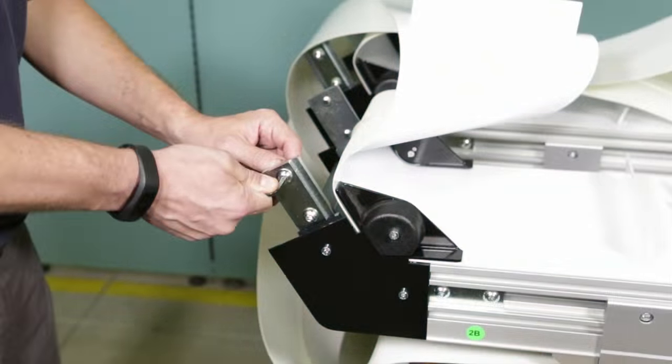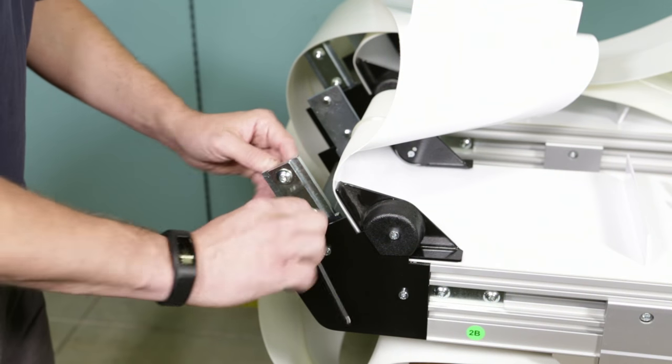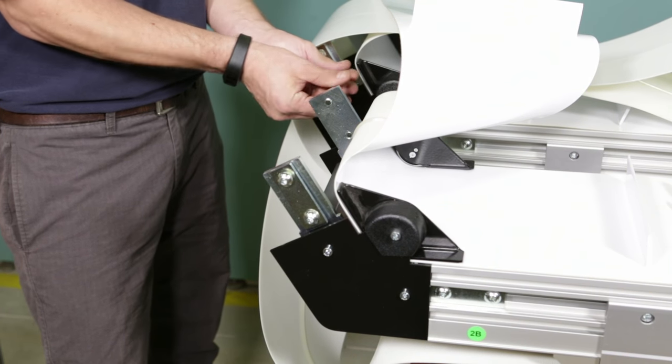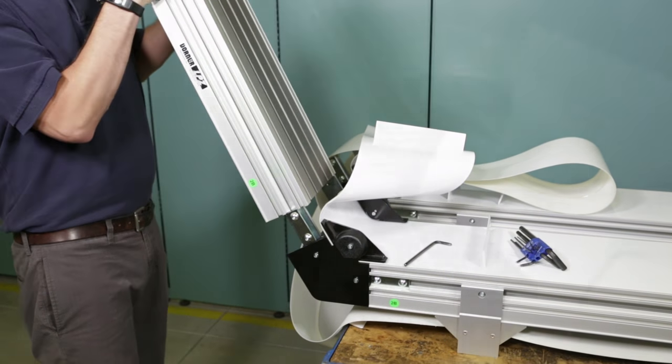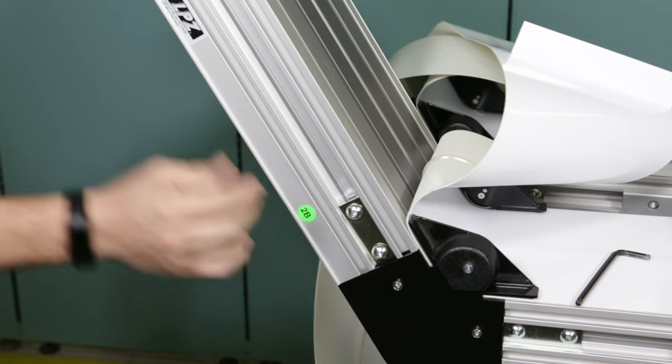If your conveyor has Z-frame knuckles, start by loosening the bolts on both sides of the knuckle and slide the frame into the knuckle. Tighten bolts on both sides of the conveyor.